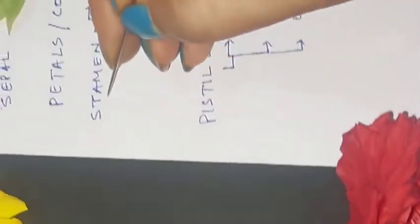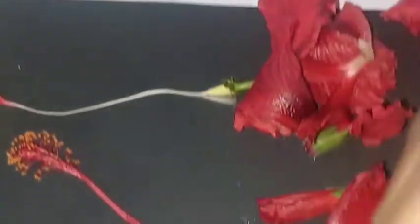This is the male part of the flower. Now let's move to the next part. Here I have just removed the filament and the anther. You can see it has powdery substance inside and it is covered with pollen so that it can go further for the fertilization.